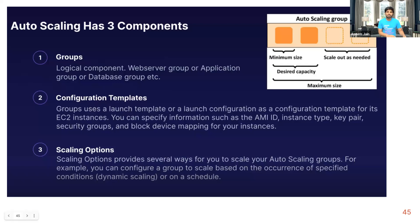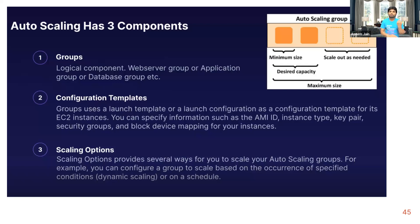ASG has three components. First are the groups, where you have a lot of compute resources like virtual VMs doing tasks. Then you have a set configuration, and then scaling options. For example, if you have a website and a lot of users come in, you scale out — you add more instances or virtual machines to handle requests. When there are fewer requests, it scales in, removing unutilized compute power, saving money. Cloud promises pay-as-you-go: the less you use, the less you pay.